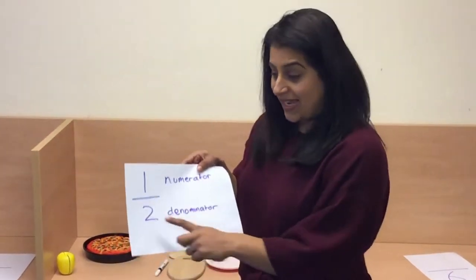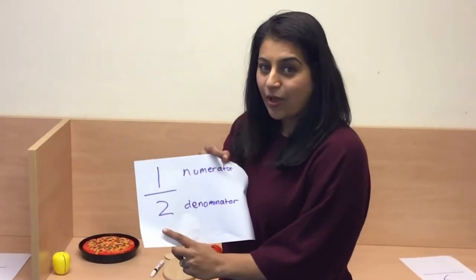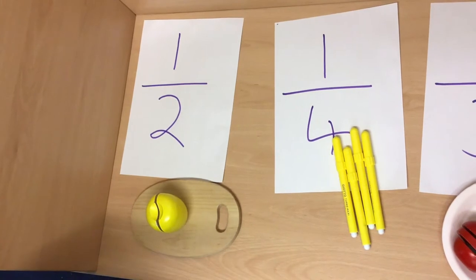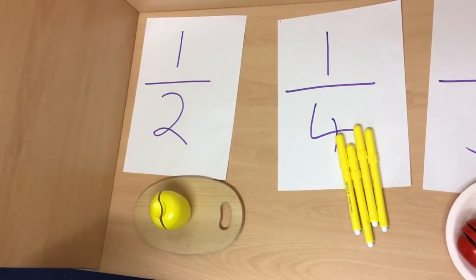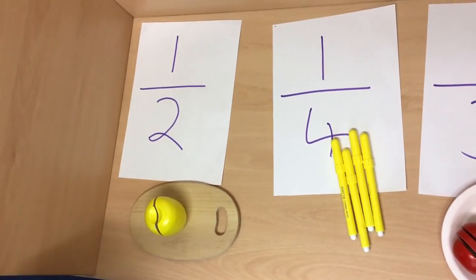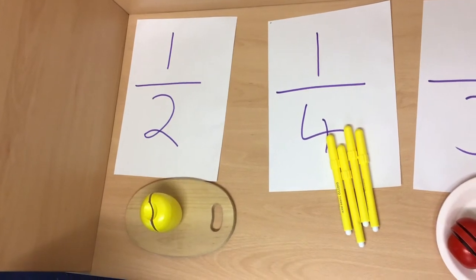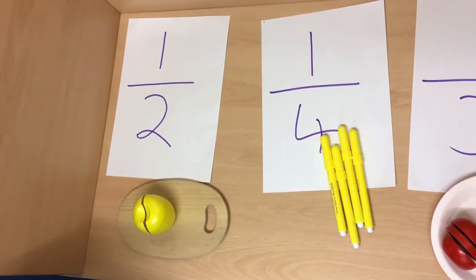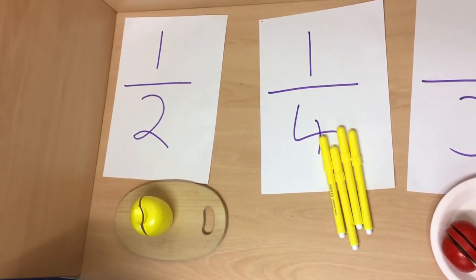The denominator represents how many parts there are in total. Let's have a look at some of our items. Here is a visual representation of how I would split things into fractions. The number at the bottom represents the denominator. The denominator shows us how many parts there are in total.